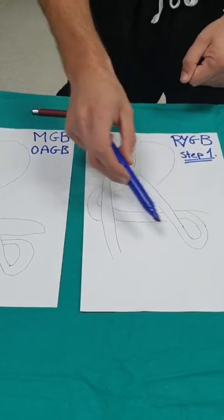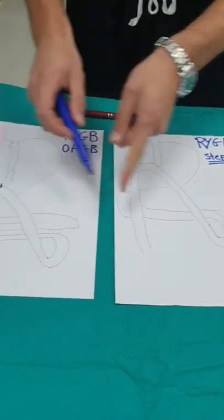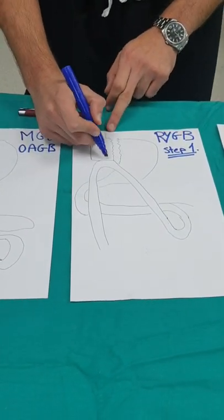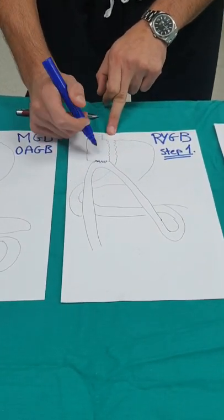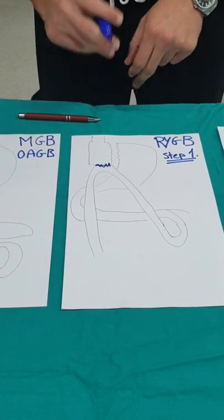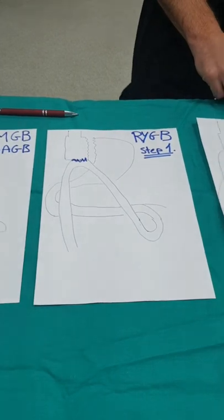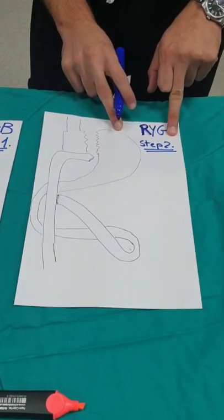Then we go, again, the same as the mini bypass, take a loop of bowel and connect it up to the stomach. So we have one connection over here. But this is only one step of the bypass. The second step of the bypass, this is the second step.